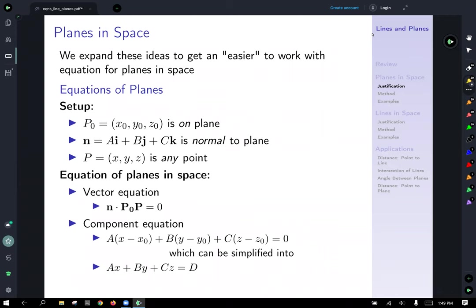So we expand these ideas to get an easier to work with equation for the plane. If p0 is x0, y0, z0 is on the plane, and n is the normal ai plus bj plus ck, that's a normal to the plane, and p is equal to x, y, z is any point, then the equation of planes in space, the dot product equation, the normal dotted with a vector p0 to p is equal to zero, leads us to the component equation a times x minus x0 plus b times y minus y0 plus c times z minus z0 equals zero. And then, since x0, y0, and z0 are all numbers, you can algebra that into shape and end up with having that all equal to some constant d, leaving all your variables on the left like we like to do.